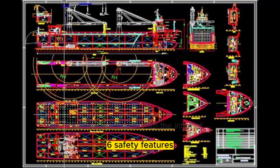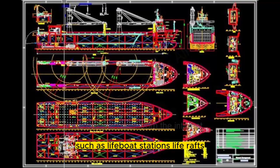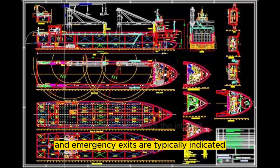6. Safety Features: Locations of safety features such as lifeboat stations, life rafts, fire extinguishers, and emergency exits are typically indicated.